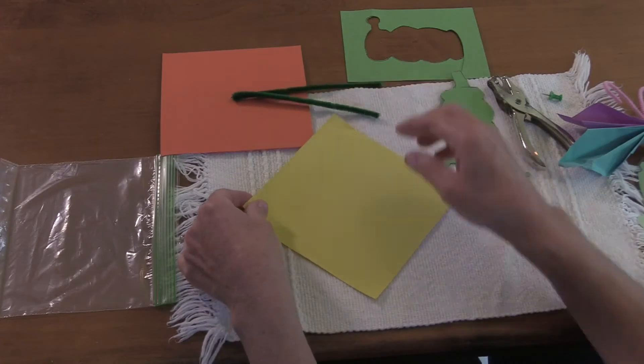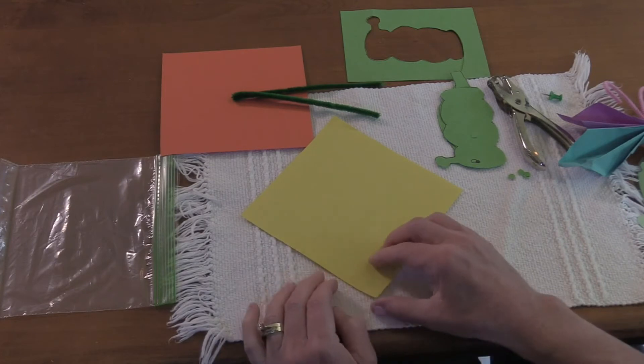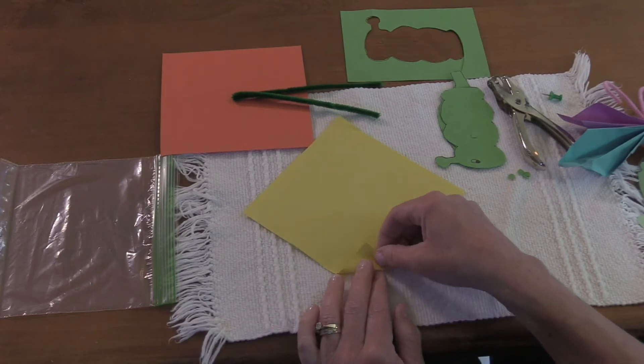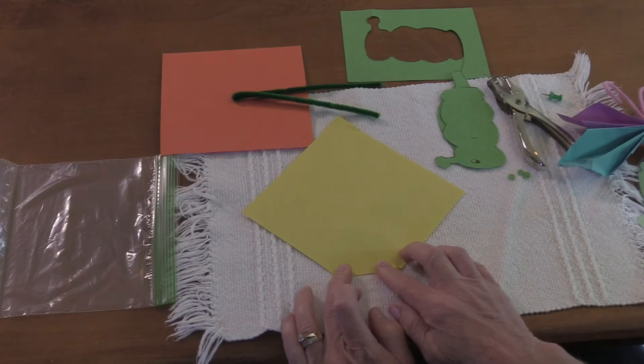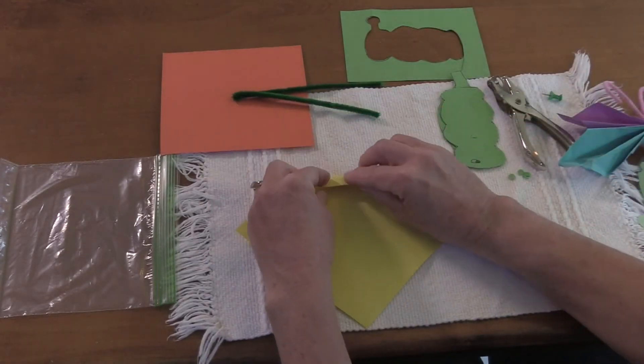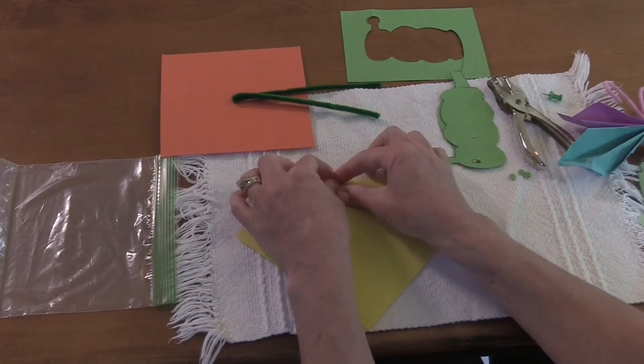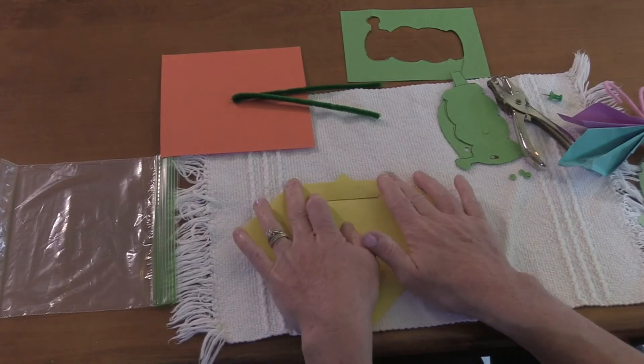When you do a butterfly, you start in the corner and you fold it up. You press hard and seal it. Then you turn it over and you fold it again, always pressing hard and sealing the paper so that it stays folded.